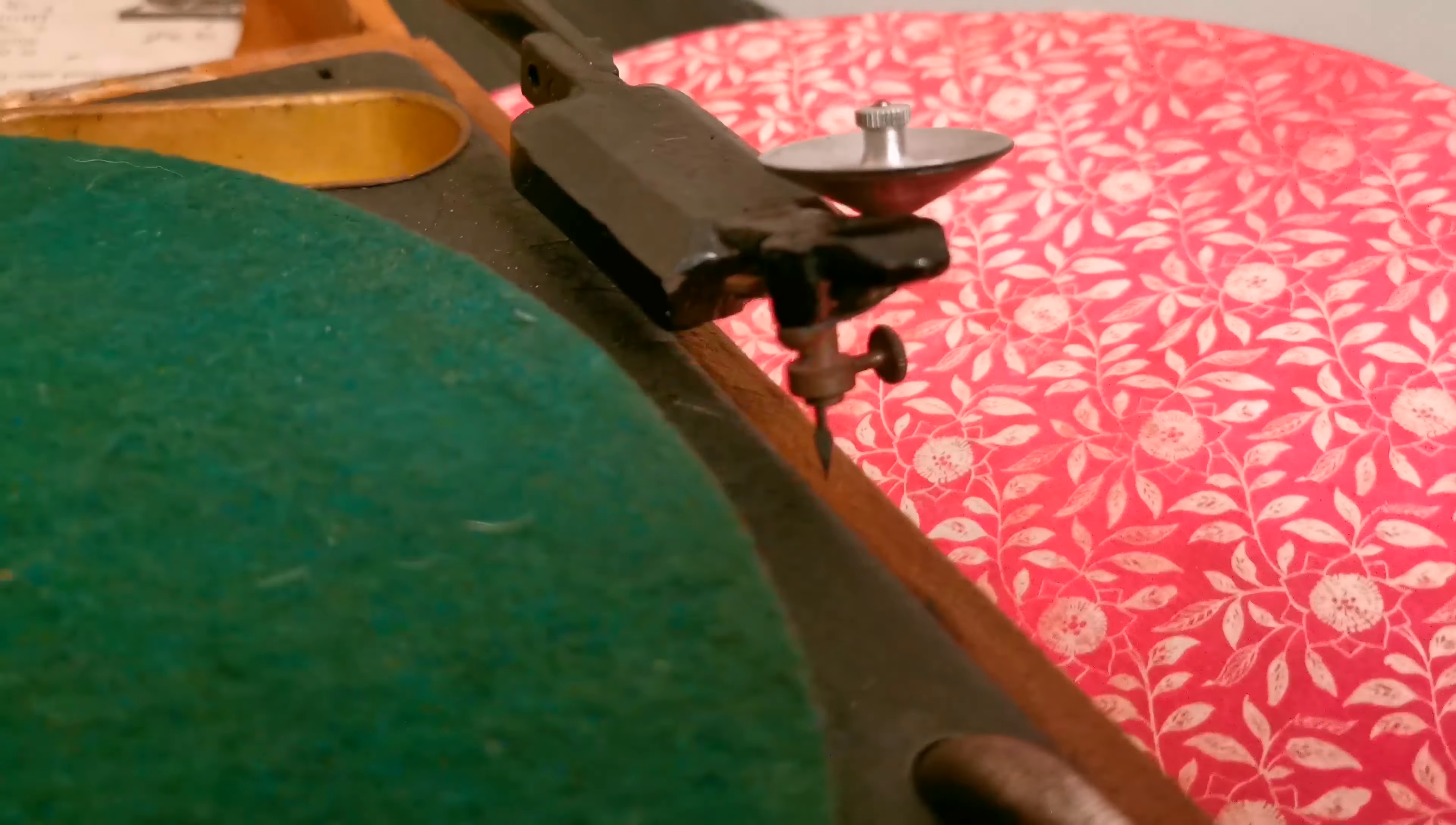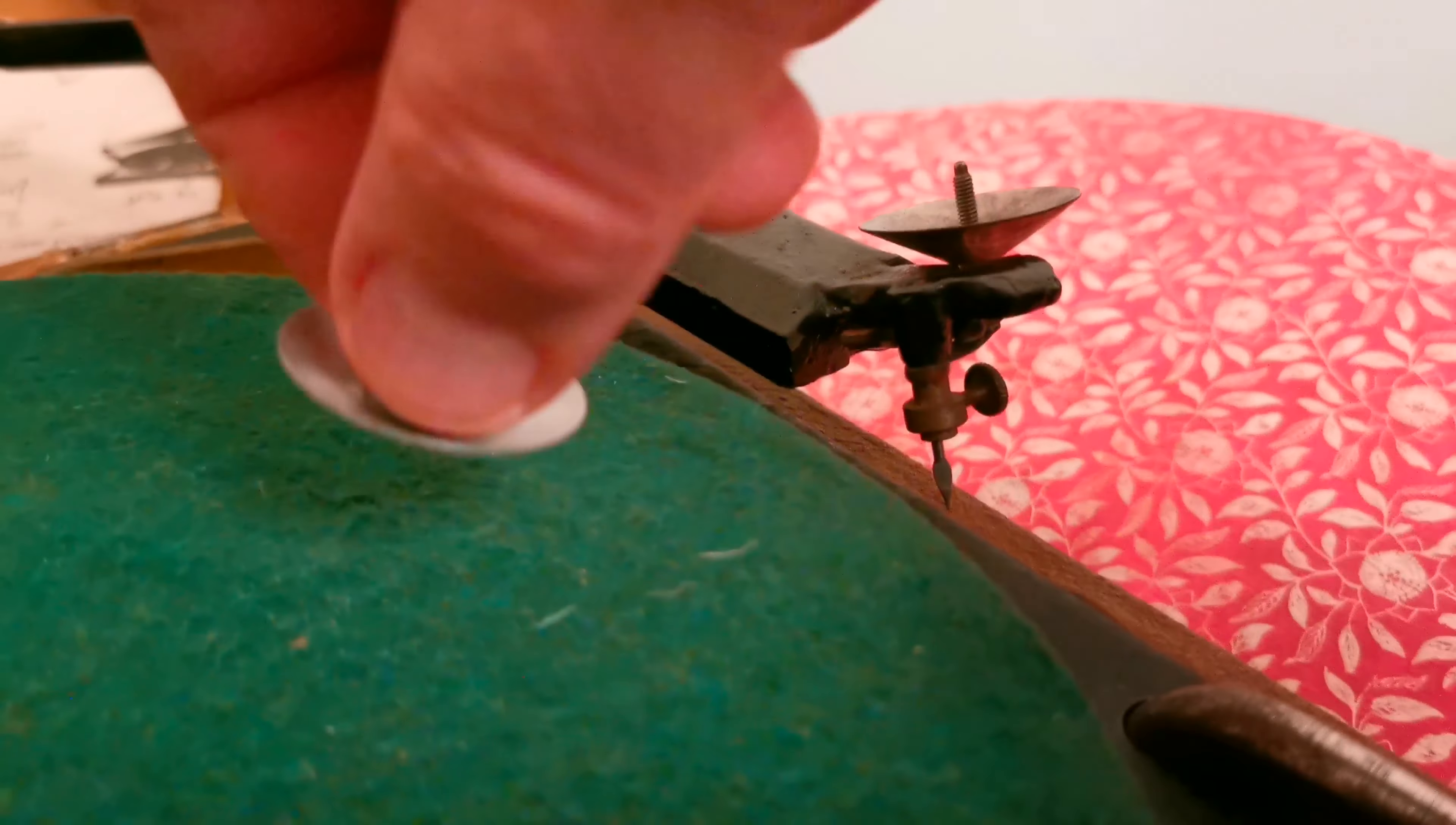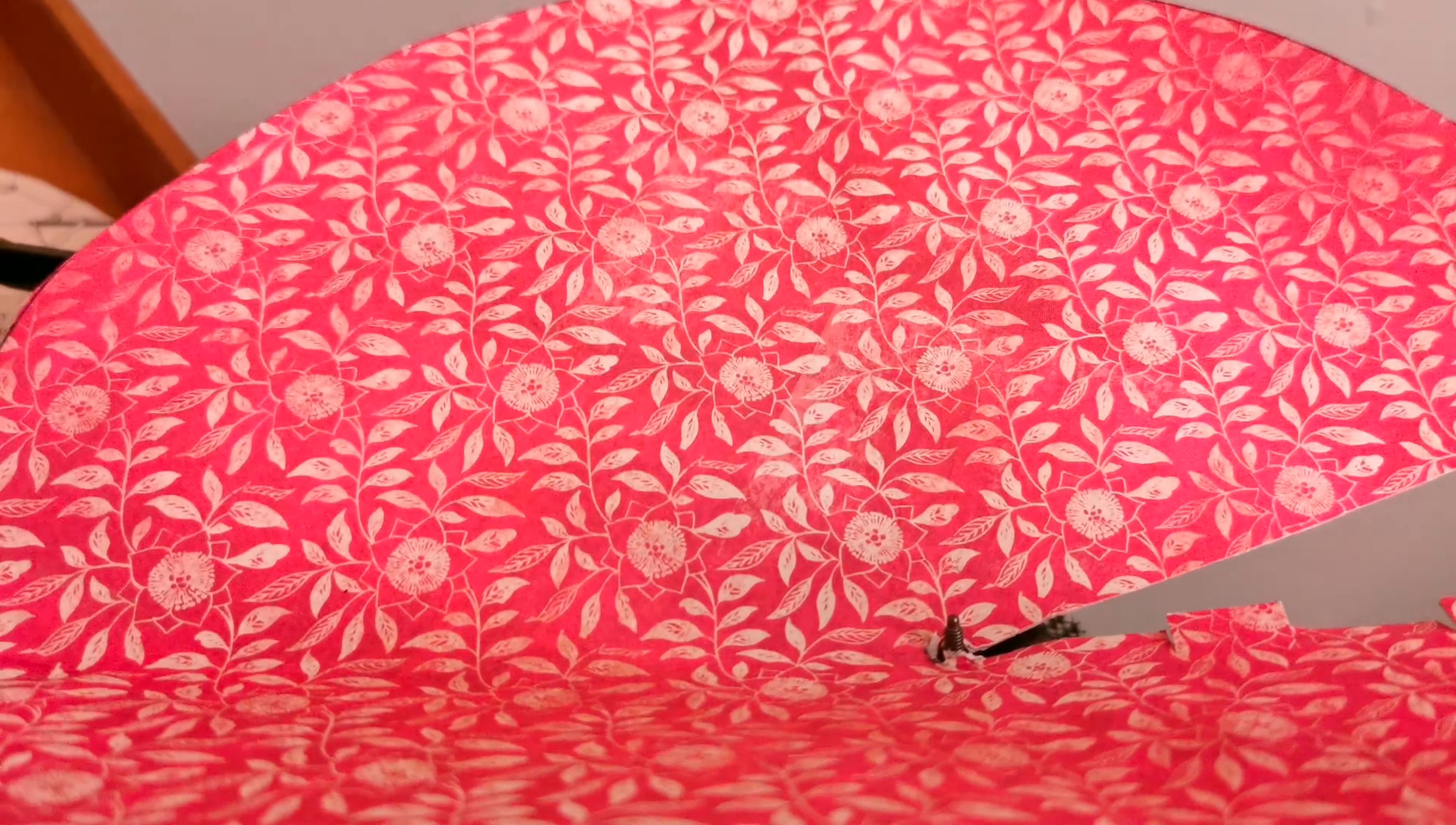And then the needle is inserted in the arm there, and this bit unscrews. Then you've turned that into a cone, and that screws back in the top. Now I'll have to cut to that because I can't do it one-handed.